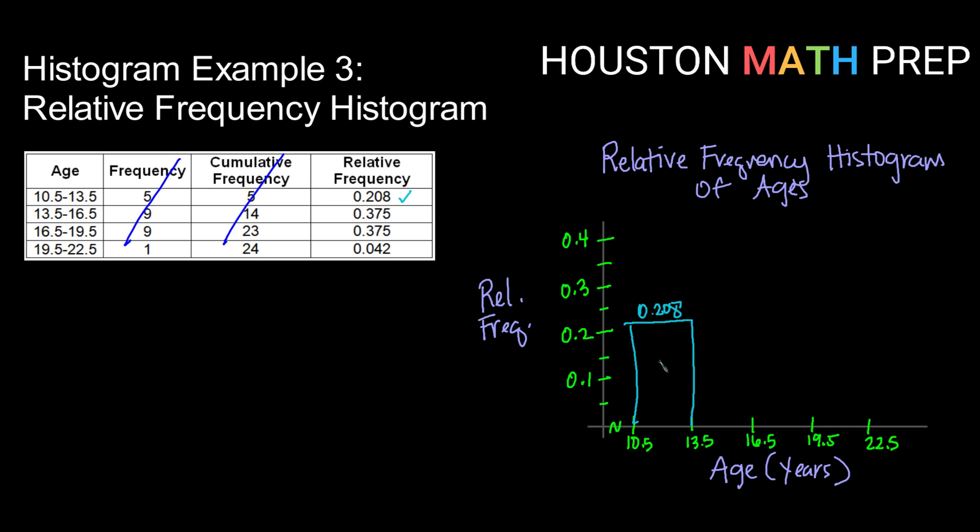For my second class, I have a relative frequency of 0.375. So this would be 0.35 here. So I would be about halfway above that. Going up to about there. And I'm going to go ahead and do my second and third class all at once since they have the same relative frequency. And then just drawing that middle bar just helps me make sure that they are exactly the same height more easily.